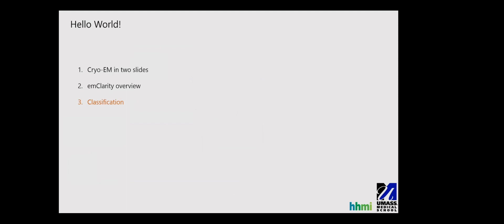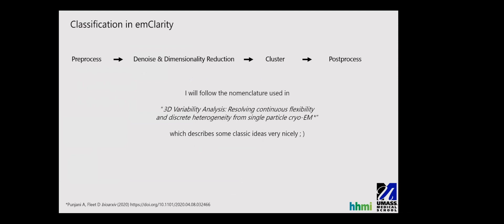So what classification is in EMClarity? There's the pre-processing, which involves getting this consensus model, and then estimating some properties that aren't included in your consensus model, which we'll call latent variables. There's a denoising step, and a dimensionality reduction, followed by clustering, which is a discretization of the different classes, and then some post-processing that's done by the user. So I'm using some nomenclature here, as Ali Punjani did in his recent bioarchive paper, where they describe some nice, well-established, and classic ideas from Cryo-EM. I think he described them very nicely, so I'll use his nomenclature.